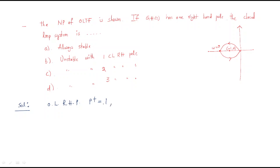We use the principle: N equals P-plus minus Z-plus. Look at the Nyquist plot — the encirclement here is anti-clockwise. Whenever the encirclement is anti-clockwise, the N value is plus 1. So N equals plus 1.